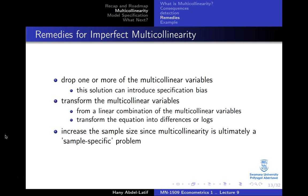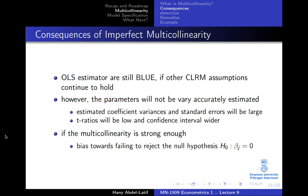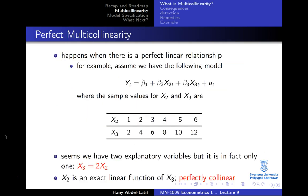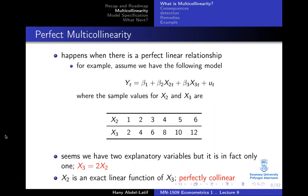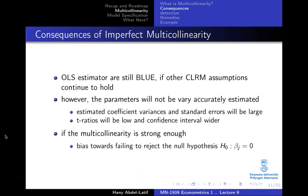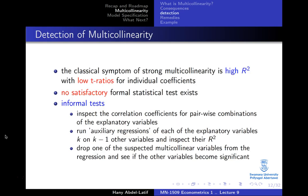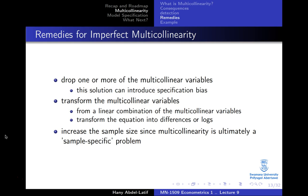You could also transform the multicollinear variables — for example, run regressions in differences or use lags. Another approach is to increase the sample size, because multicollinearity can be a sample-specific problem. If the collinearity only occurs in a small portion of a larger dataset, it may not be an issue with more data points.